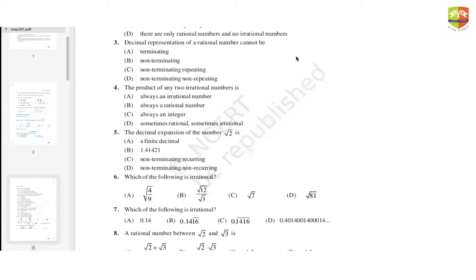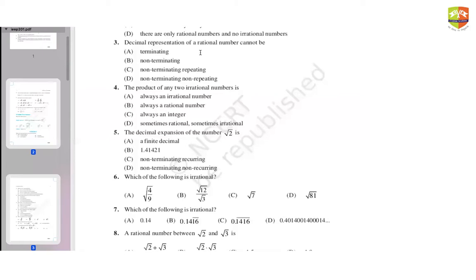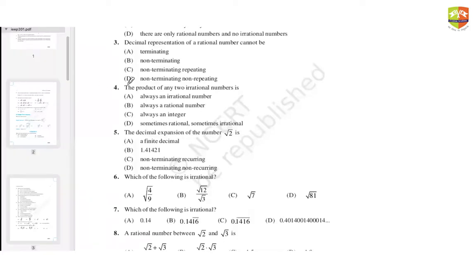Question number three: the decimal representation of a rational number cannot be non-terminating non-repeating, because if it is non-terminating non-repeating, it becomes an irrational number and can never be represented in the form P by Q. It can be terminating, non-terminating repeating, or non-terminating — but never non-terminating non-repeating. So that's the answer.